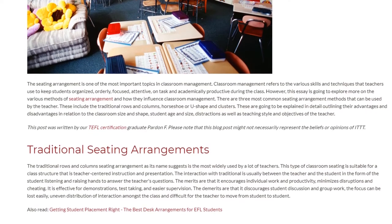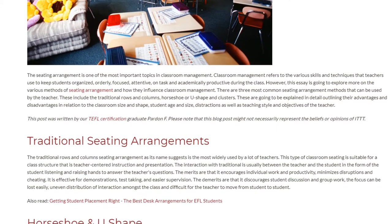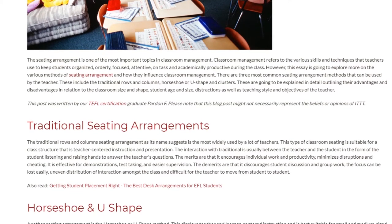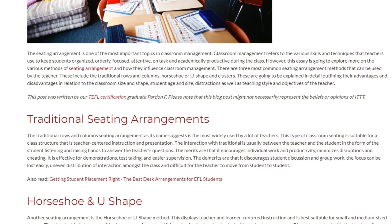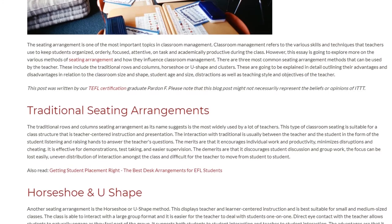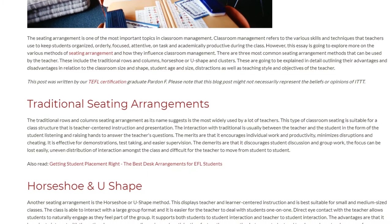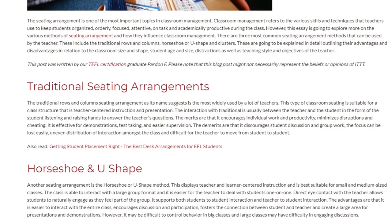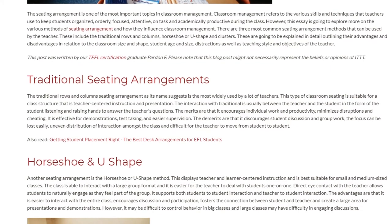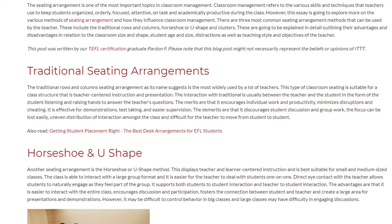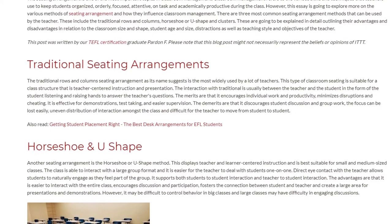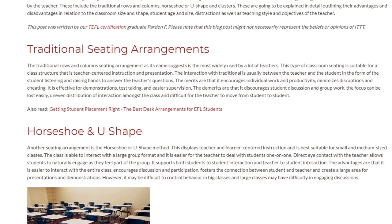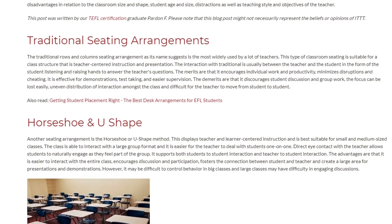The traditional rows and columns seating arrangement, as its name suggests, is the most widely used by teachers. This type is suitable for a teacher-centered instruction and presentation structure. Interaction is usually between the teacher and student, with students listening and raising hands to answer questions. The merits are that it encourages individual work and productivity, minimizes disruptions and cheating, and is effective for demonstrations, test-taking, and easier supervision. The demerits are that it discourages student discussion and group work, focus can be lost easily, interaction is unevenly distributed, and it is difficult for the teacher to move from student to student.